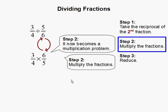Multiply the fractions. 3 times 6 is 18, and 4 times 5 is 20. You can also reduce before you multiply. In this case, we are multiplying first and we are going to reduce at the end.